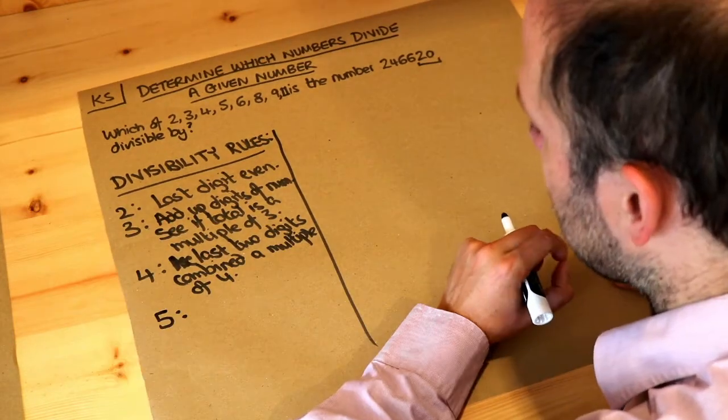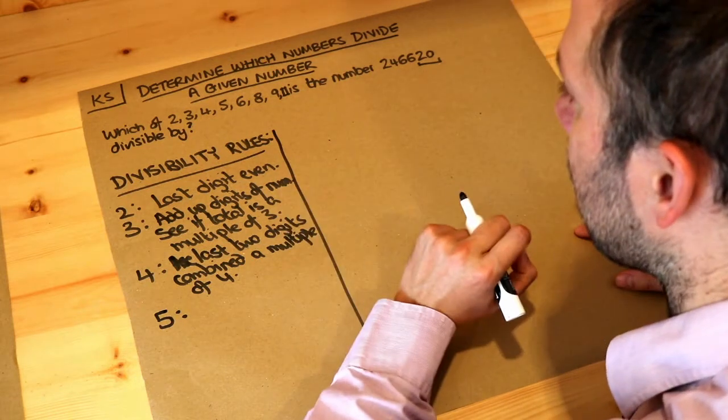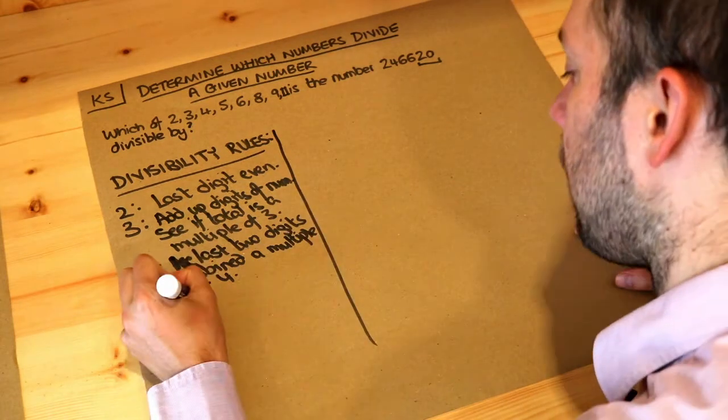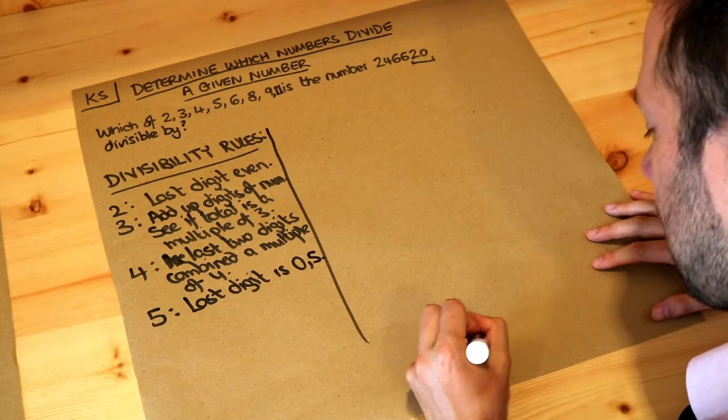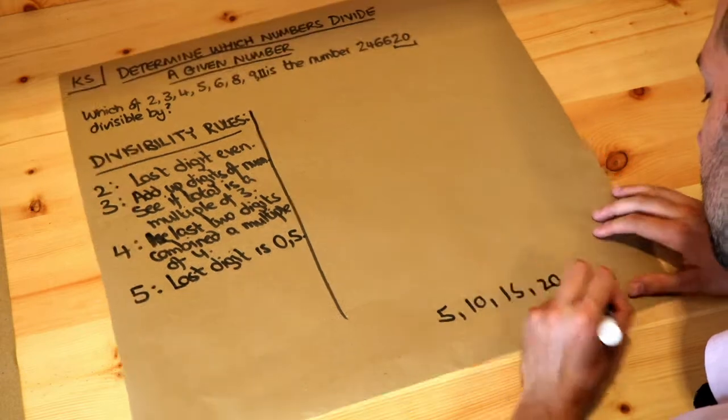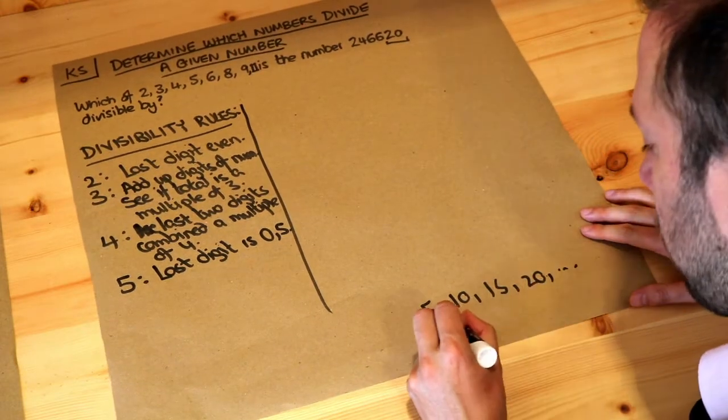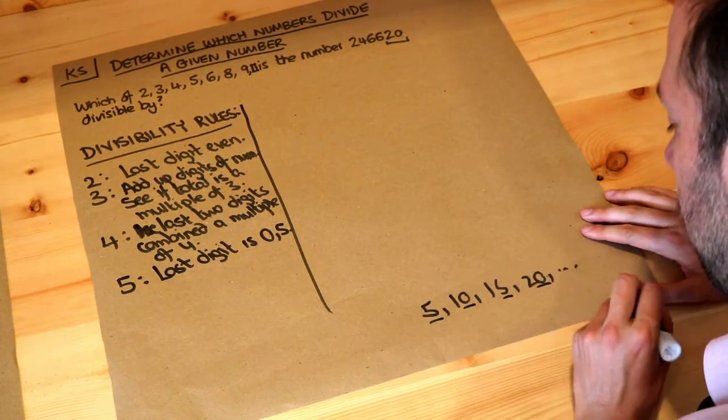If a number is in the 5 times table it must end with either a 0 or 5. So the last digit is 0 or 5. Just to demonstrate that, if I write the 5 times table: 5, 10, 15, 20, etc., you can see that all of these numbers end with 0 or 5.